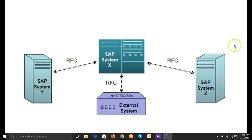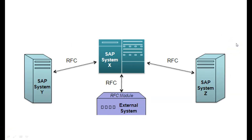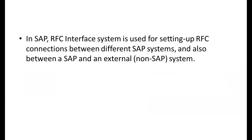Let's take an example of System Y and System Z. Between System Y and System Z there is a protocol through which data is transferred from one system to the other — this is where we use RFC. The SAP RFC interface system is used for setting up RFC connections between different systems, including between SAP and non-SAP systems.